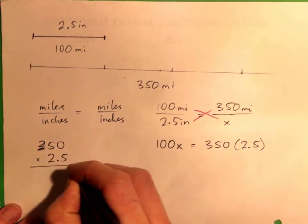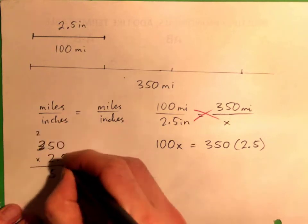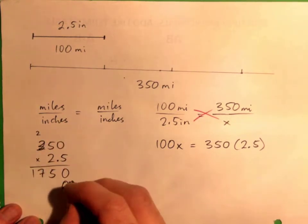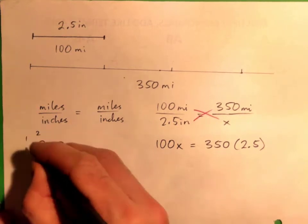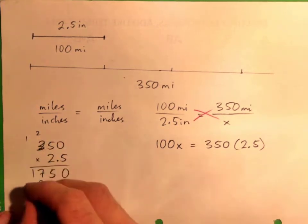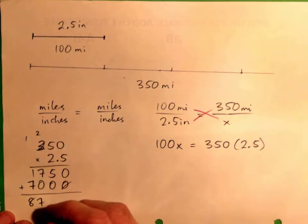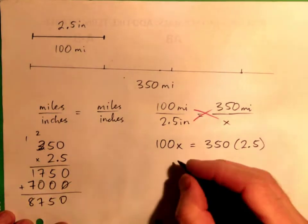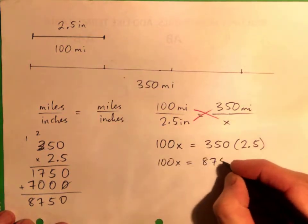But 350 times 2.5, 5 times 0 is 0, 5 times 5 is 25, carry 2, 5, 3 is 15, 2 is 17, put down a 0, 2 times 0 is 0, 2 times 5 is 10, carry 1, 2 times 3 is 6, and 1 is 7, and then add 8, 7, 5, 0.